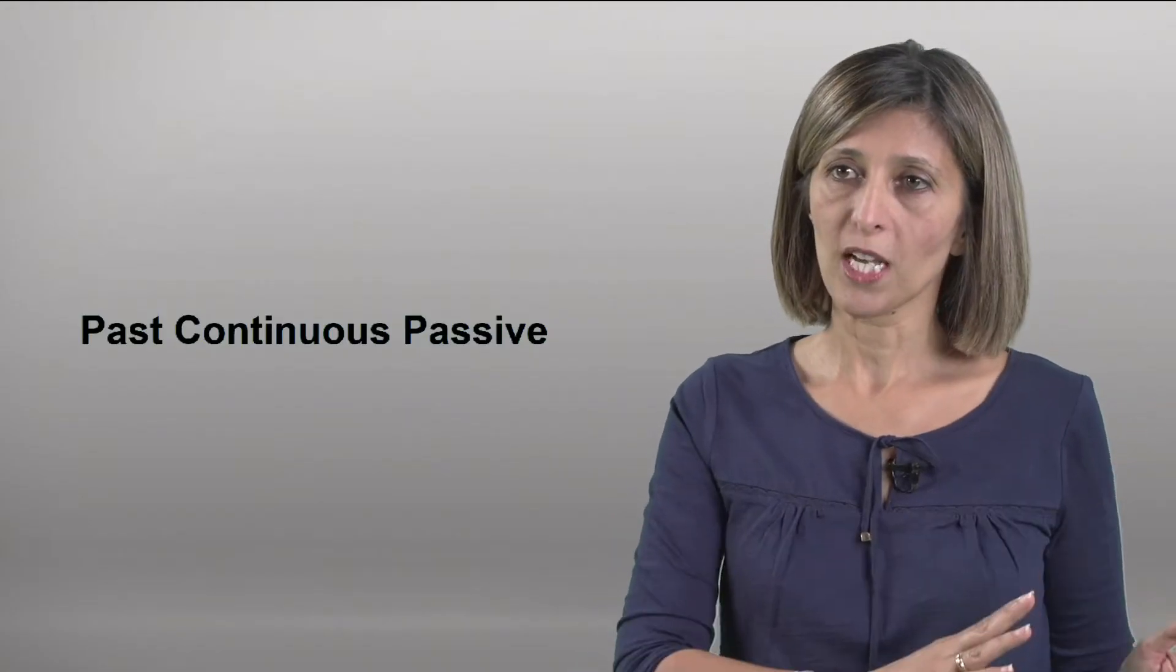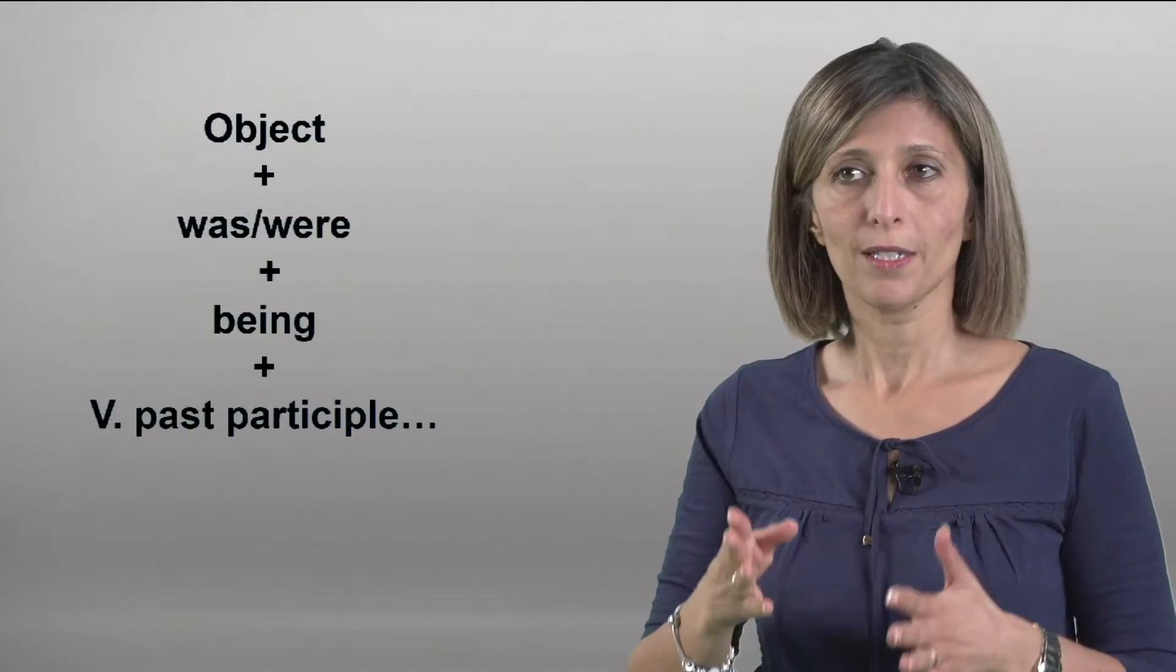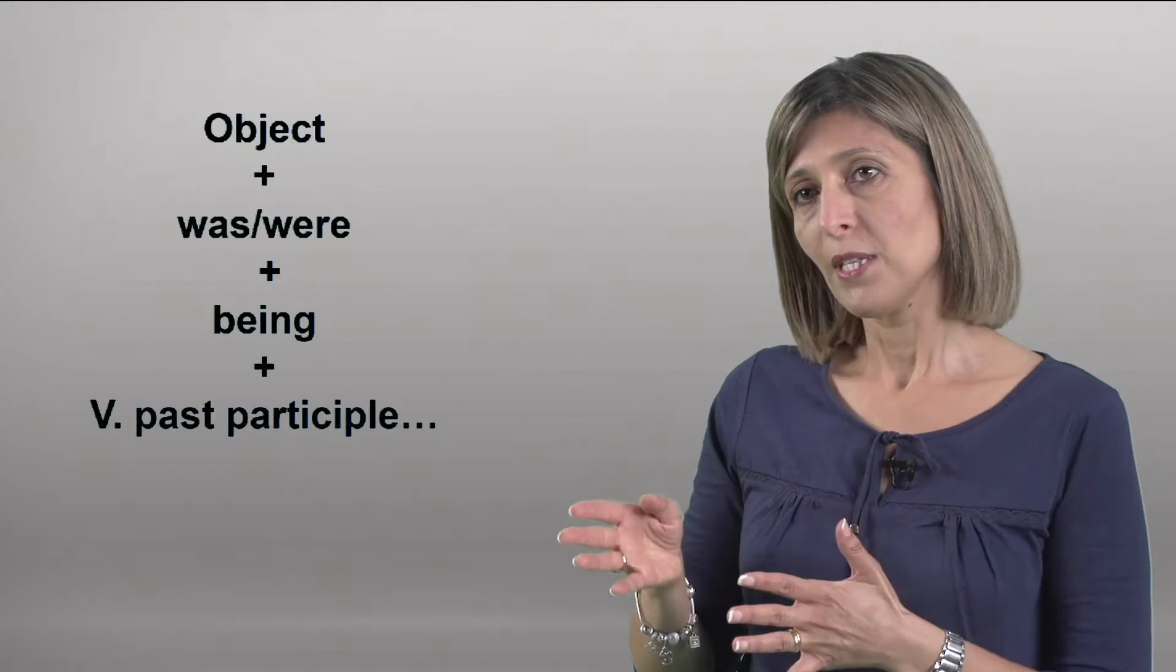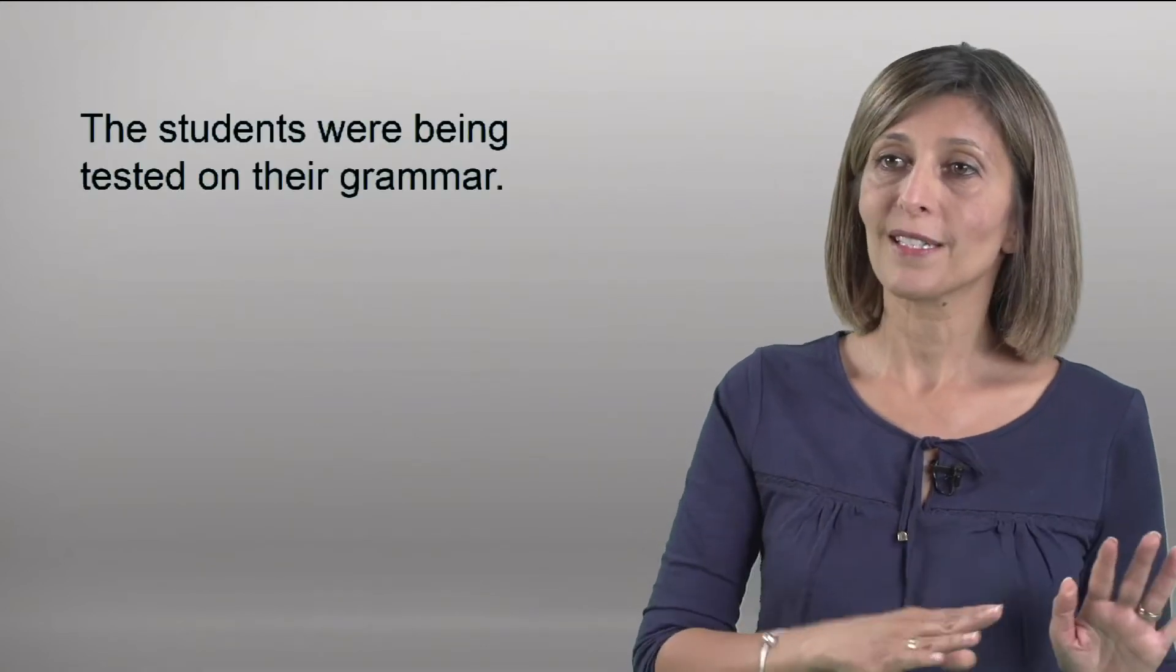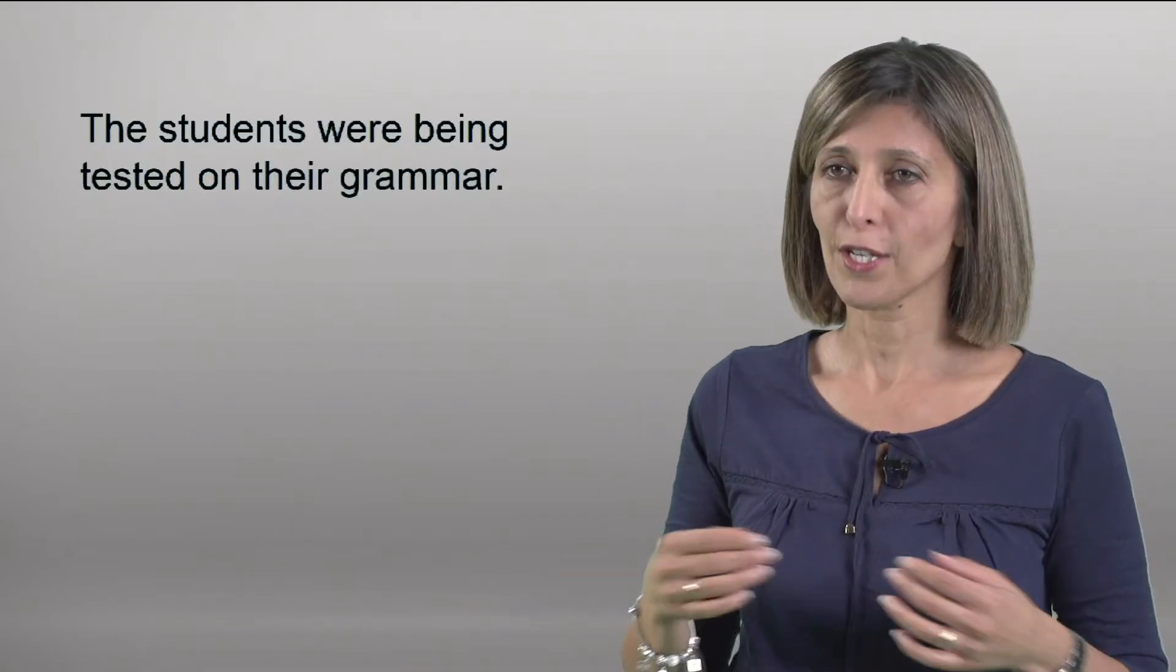The past continuous passive is formed by an object plus was or were, and being plus the past participle form of the verb. For example, the students were being tested on their grammar.